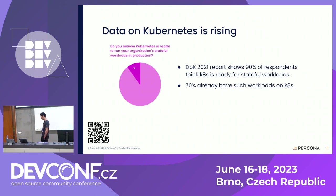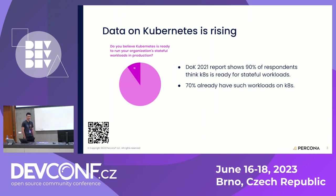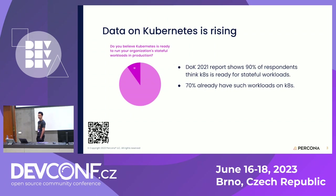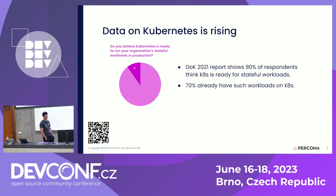That makes me think: why do people want to deploy their databases on Kubernetes? You could argue it's just hype, and maybe you're not wrong. But I believe the reason is that people like having a standard API for their whole infrastructure, and they also like the ease of scalability Kubernetes provides — and they want the same for their databases.